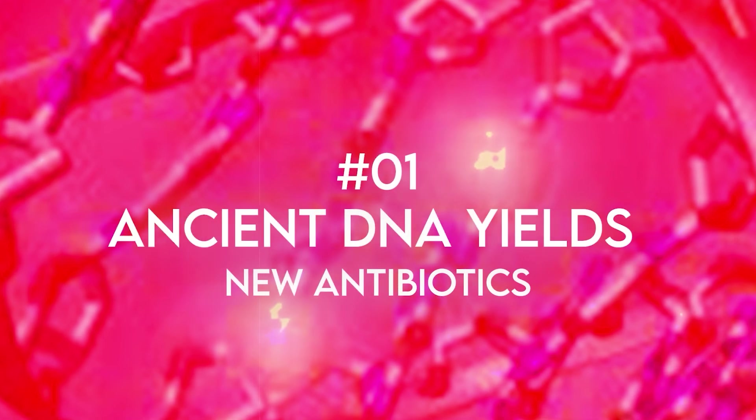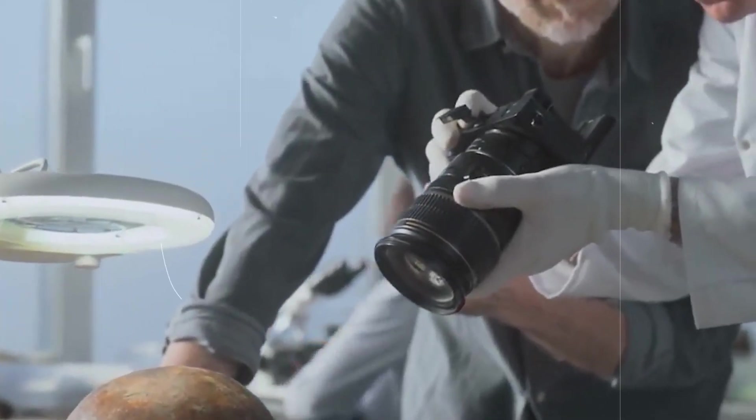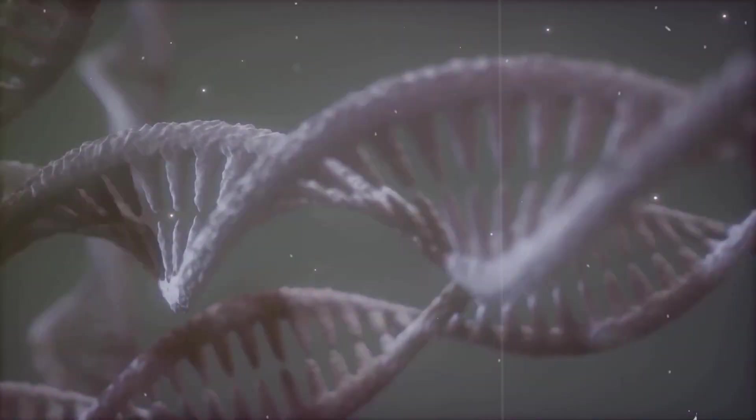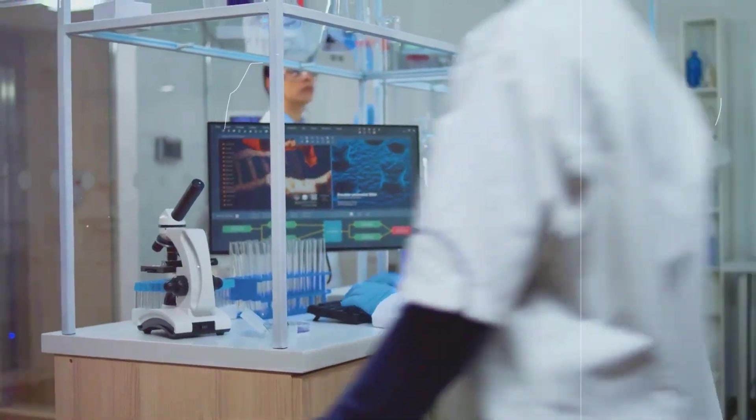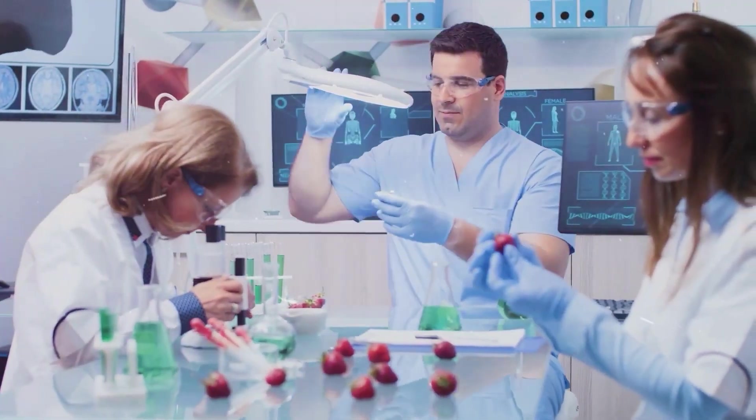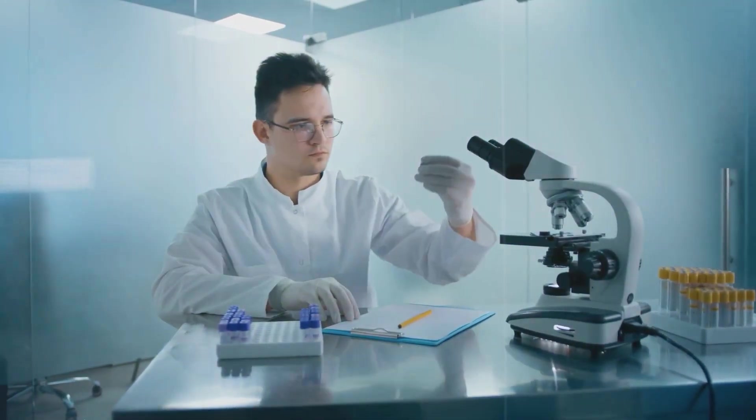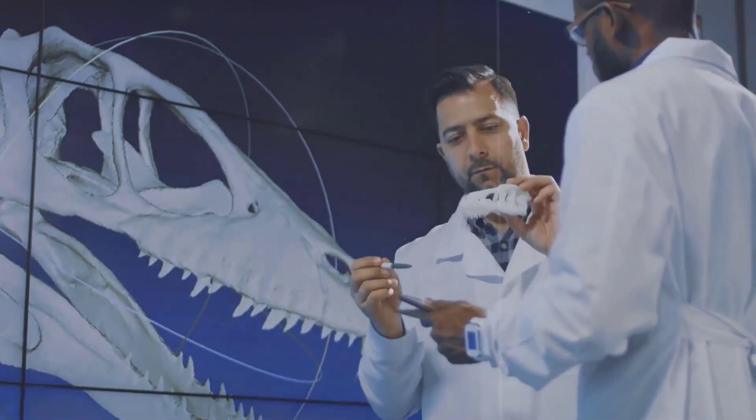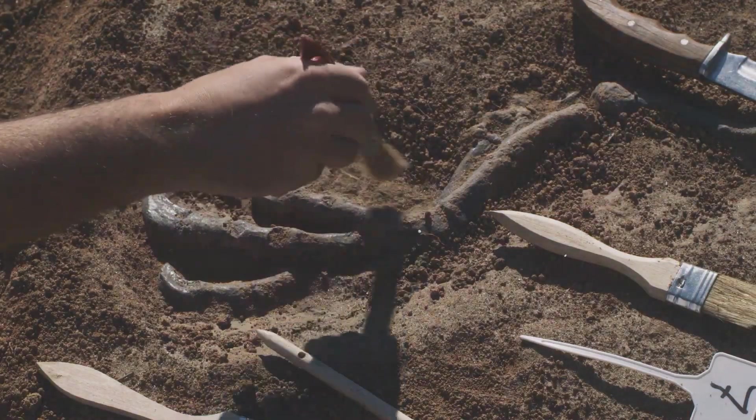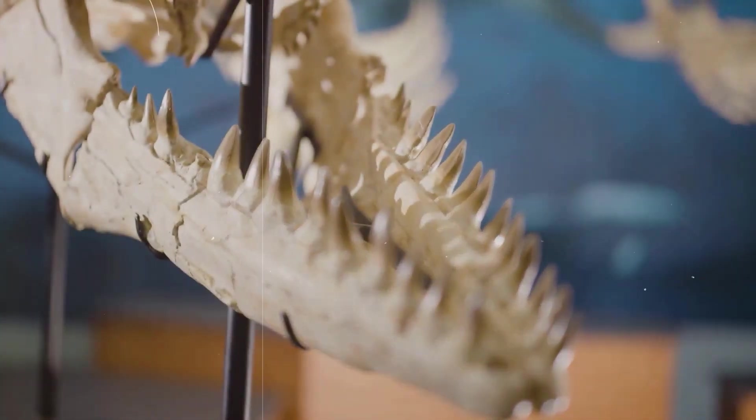Number 1. Ancient DNA yields new antibiotics. Prepare yourself for a wild turn in the battle against superbugs. By physically digging into the DNA of ancient woolly mammoths, scientists have found a potent new antibiotic known as mammothicin. In lab mice, this powerful peptide has demonstrated remarkable efficacy in eliminating antibiotic-resistant germs that are difficult for contemporary therapy to combat. Nature seems to have left us a hidden weapon that has been hidden for ages, but while we're reviving ancient solutions, dinosaurs are rewriting their icy history.